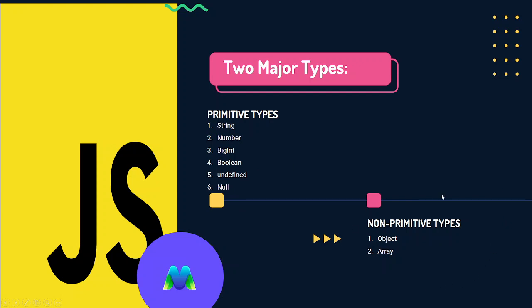Non-primitive type — as we say for the beginner, you can see the number of non-primitive types. Every non-primitive type in JavaScript is an object.